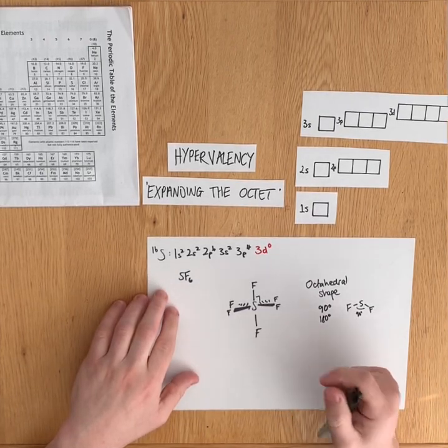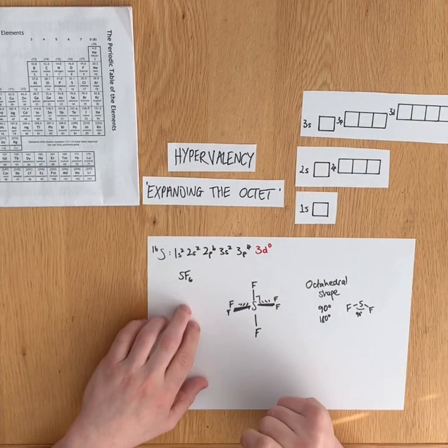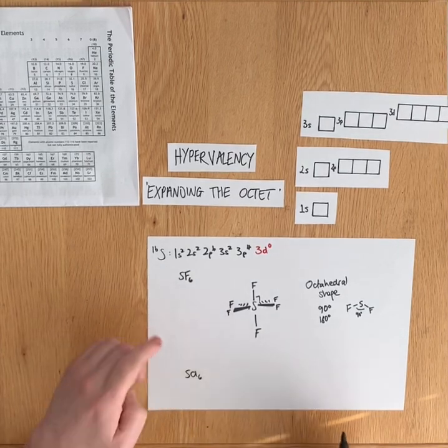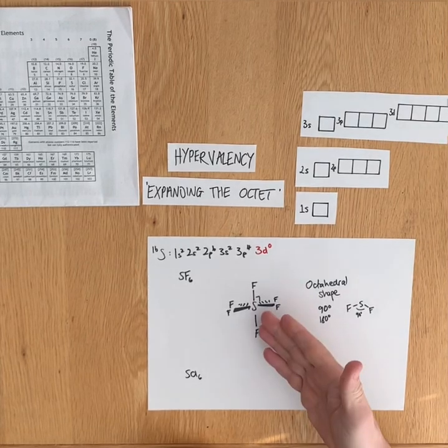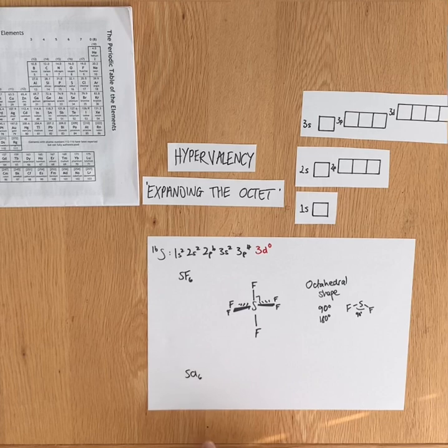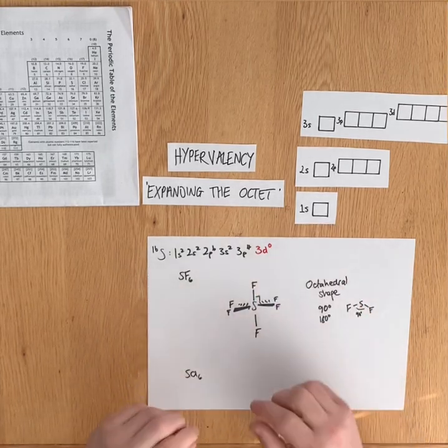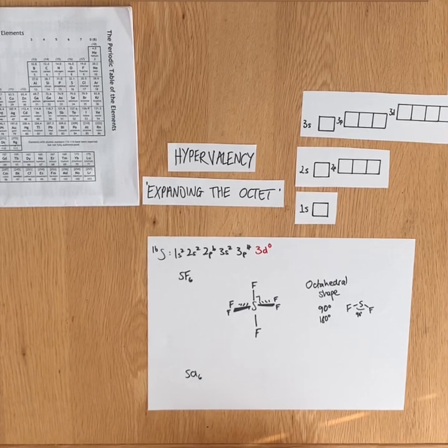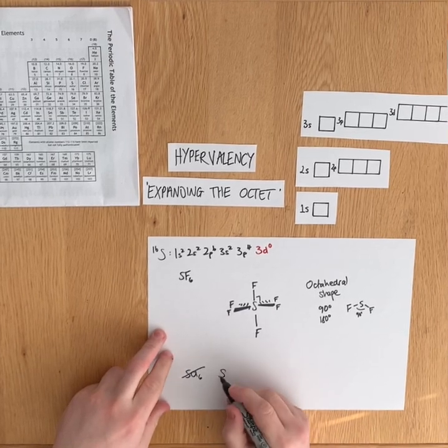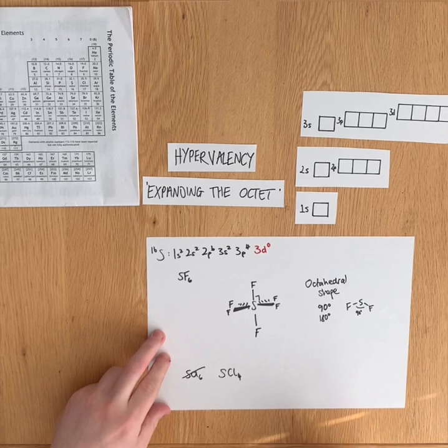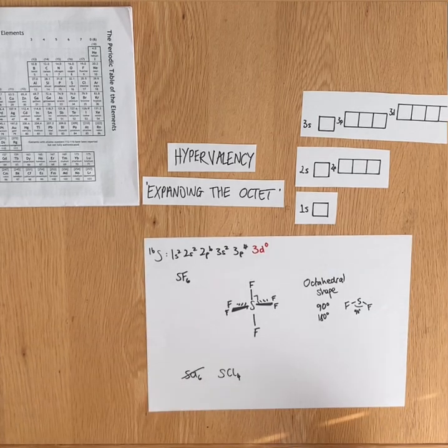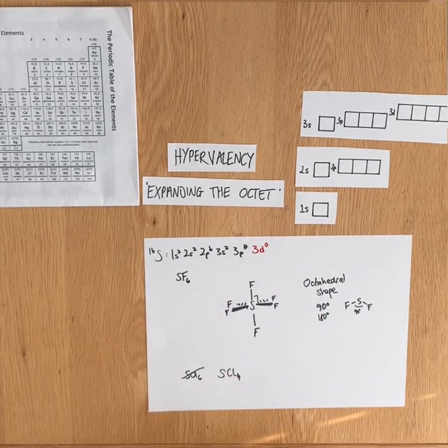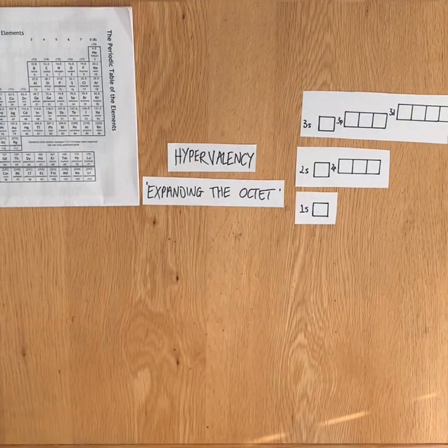SCl₆ doesn't actually form because for the sulfur atom to form covalent bonds with six different chlorine atoms, actually the chlorine atoms are too big to get six of them around the central sulfur. SF₄ is what forms with sulfur. So SCl₆ doesn't exist; sulfur tetrachloride does exist, which again has an expanded octet but not fully expanded.